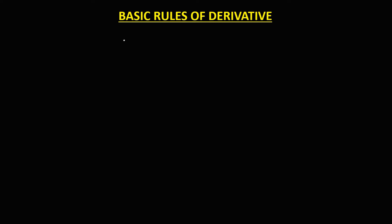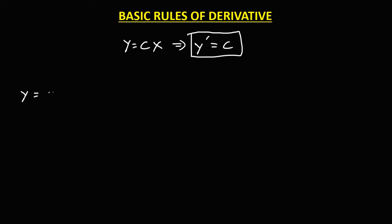For y equals a constant times a variable, y prime is equal to the constant. So if we have y equals 3x, the derivative is equal to 3. Then for y equals negative 5x,